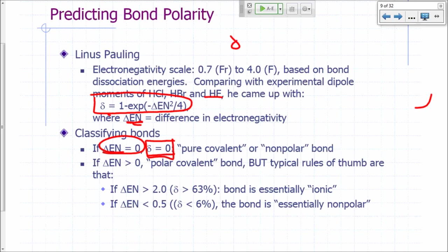Why is that? Delta would be 1 minus e to the 0 over 4, right, 0 squared. So 1 minus, what is 0 squared divided by 4? 0. What is e to the 0? Anything raised to the power 0 is 1, so what's 1 minus 1? 0.